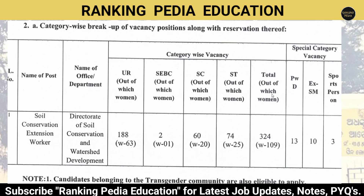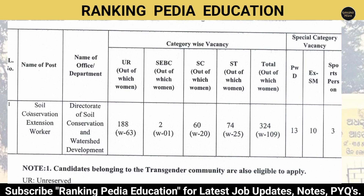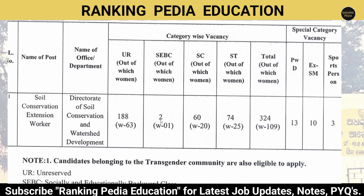Category-wise breakup of vacancies: Unreserved category has 188 vacancies, of which 63 are for women. SC/BC has 2 vacancies with 1 for women. SC category has 60 vacancies with 20 for women. Total vacancies are 324, of which 109 are for women. PWD candidates have 13 vacancies, Ex-SM category has 10 vacancies, and sports persons have 3 vacancies.